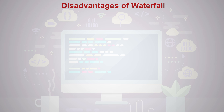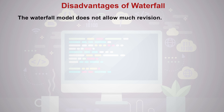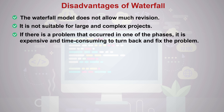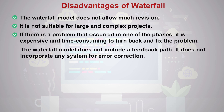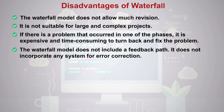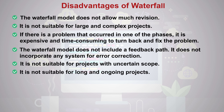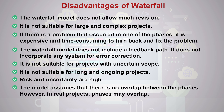Disadvantages of the waterfall model: it does not allow much revision and is not suitable for large and complex projects. If a problem occurs in one of the phases, it is expensive and time-consuming to go back and fix it. There is no feedback path, no system for error correction, and it is not suitable for projects with uncertain scope or long, ongoing projects. Risk and uncertainty are high, and the model assumes no overlap between phases, though in real projects phases may overlap.